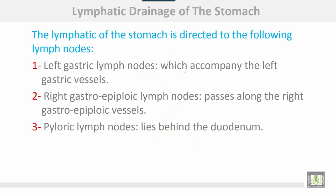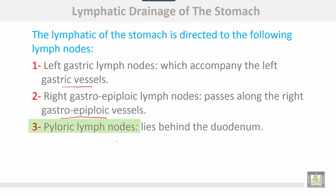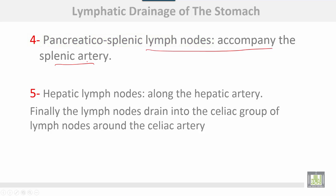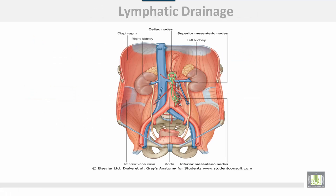Lymphatic drainage of the stomach is directed to the following lymph nodes: left gastric lymph nodes accompanying the left gastric vessels; right gastro-epiploic lymph nodes along the right gastro-epiploic vessels; pyloric lymph nodes lying behind the duodenum; pancreatic or splenic lymph nodes accompanying the splenic artery; and hepatic lymph nodes along the hepatic artery. Finally, all lymph nodes drain into the celiac group of lymph nodes around the celiac artery.